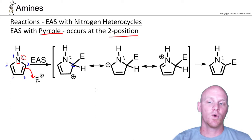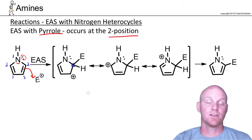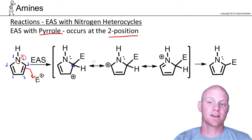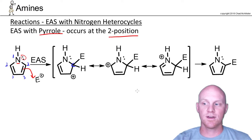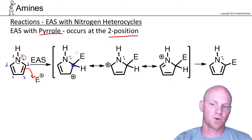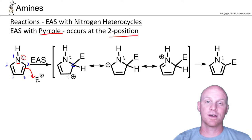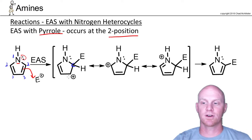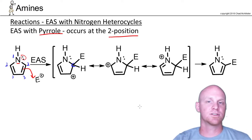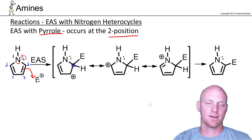When you do electrophilic aromatic substitution at position two, you get the most stabilized intermediate. In this case, we get three resonance structures. If we did EAS at the three position instead, we would have only gotten two resonance structures. That's why it occurs at the two position — you get the most stable intermediate.